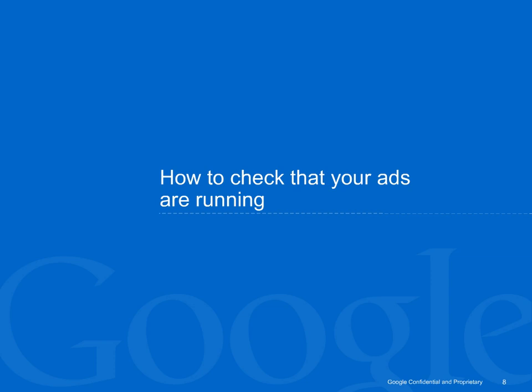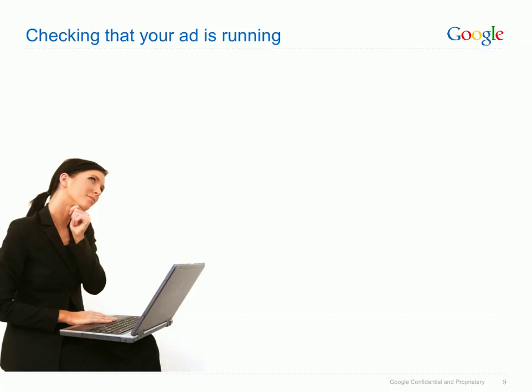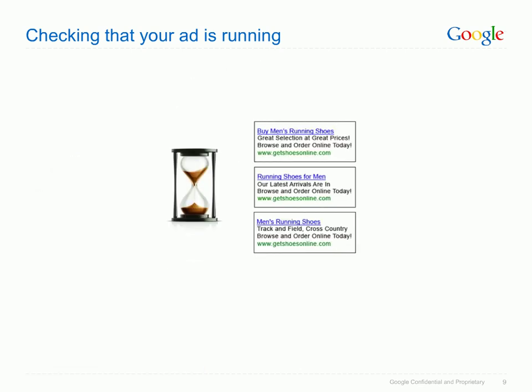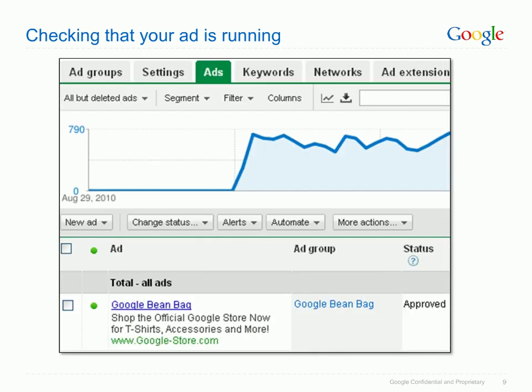You have set up your new AdWords campaign, but how do you know if your ads are running? We'll show you how to find out. Any new or edited ads will go through an approval process, which can take up to 48 hours. You can see if your ads have been approved by simply clicking on the Ads tab and then checking your ad status.